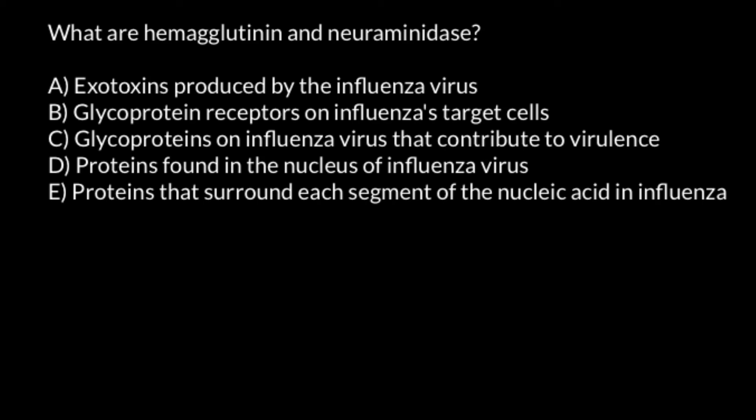Now we can choose the correct answer. Answer A — exotoxins produced by the influenza virus — this is the wrong answer. Answer B — glycoprotein receptors on influenza target cells — this is also the wrong answer. The correct answer is C: glycoproteins on the influenza virus that contribute to virulence.